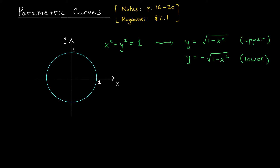One option would be to break things into cases and consider the upper half circle, which has y as a function of x, and separately consider the lower half circle. But nobody wants to break their work into cases — that's too much work. So instead I'm going to give you a different way to describe this curve. Suppose that we have a little bug walking around the border of the circle. At time t the bug's position is given by cos t, sine t.